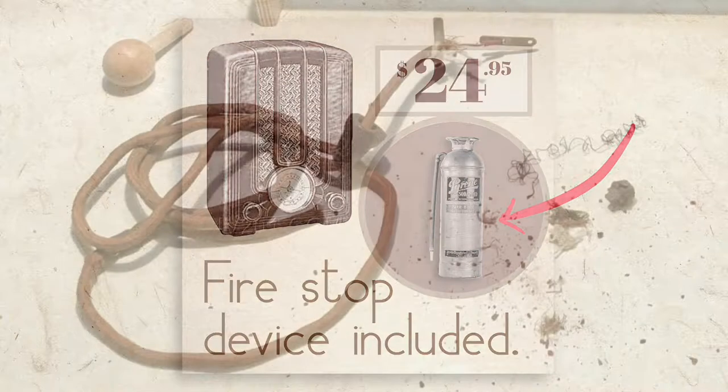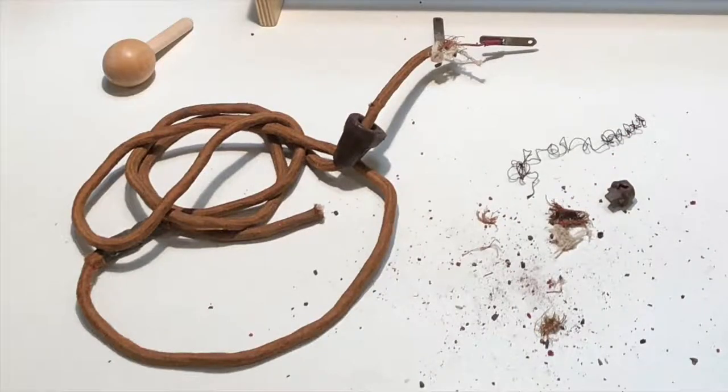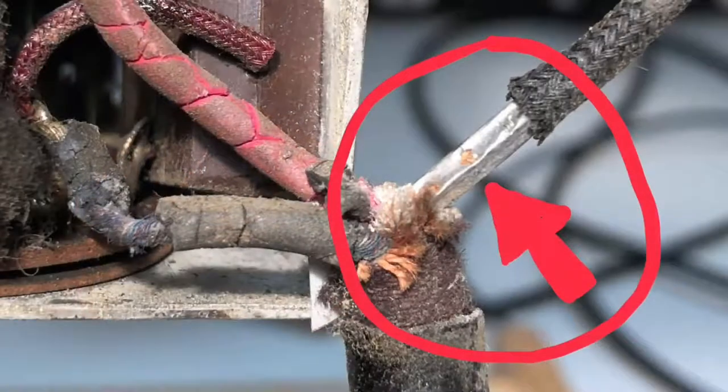The problem was, and is, the cord. Here's the one from our radio. As you can see, it's pretty thick. That's because under the cloth insulation are not just the wires to power the radio, but a three-foot-long resistor.